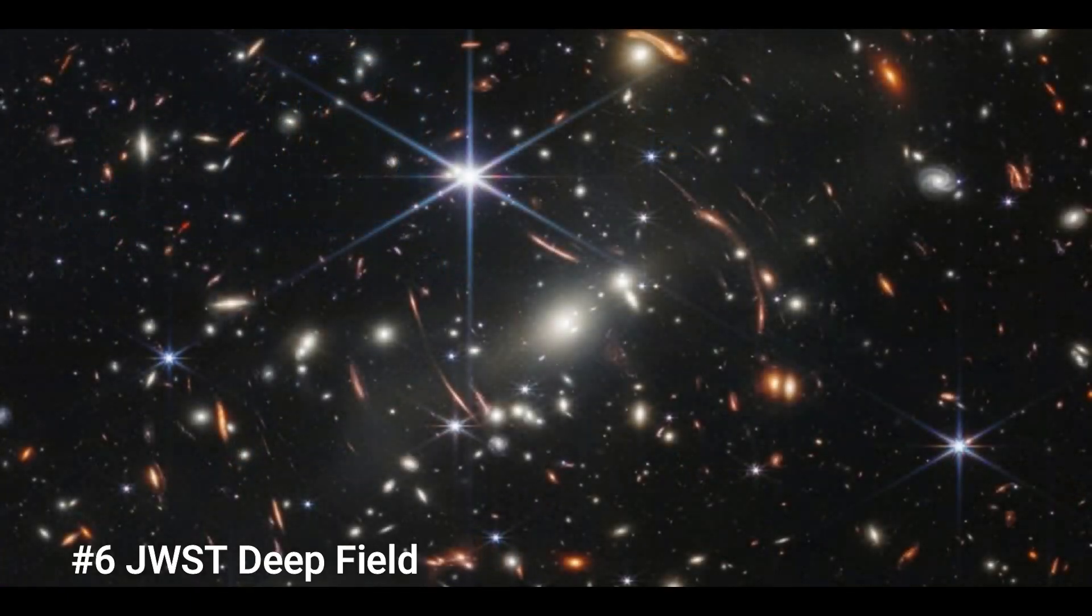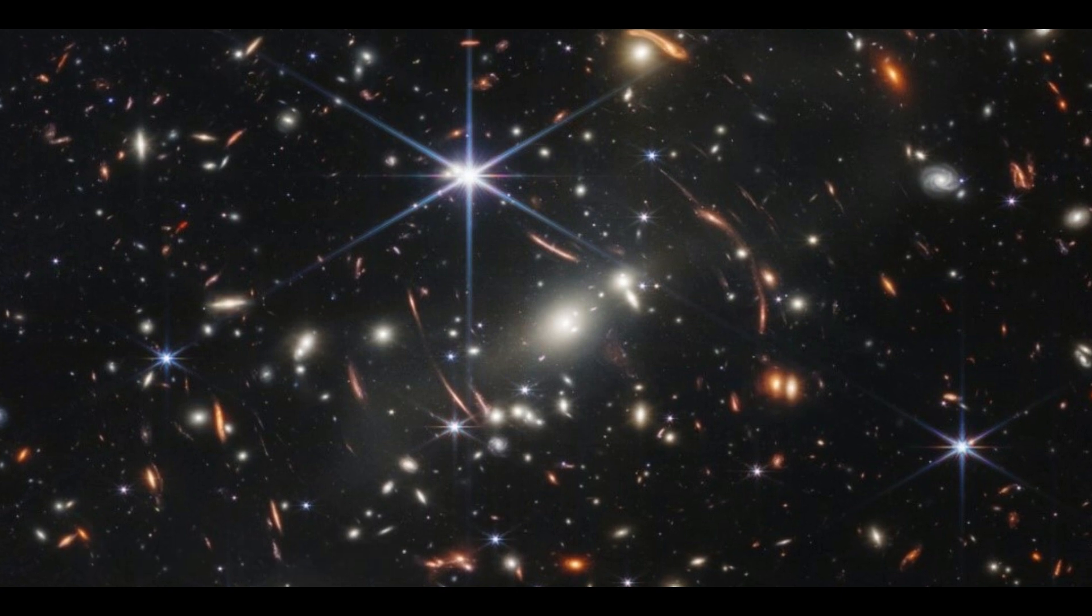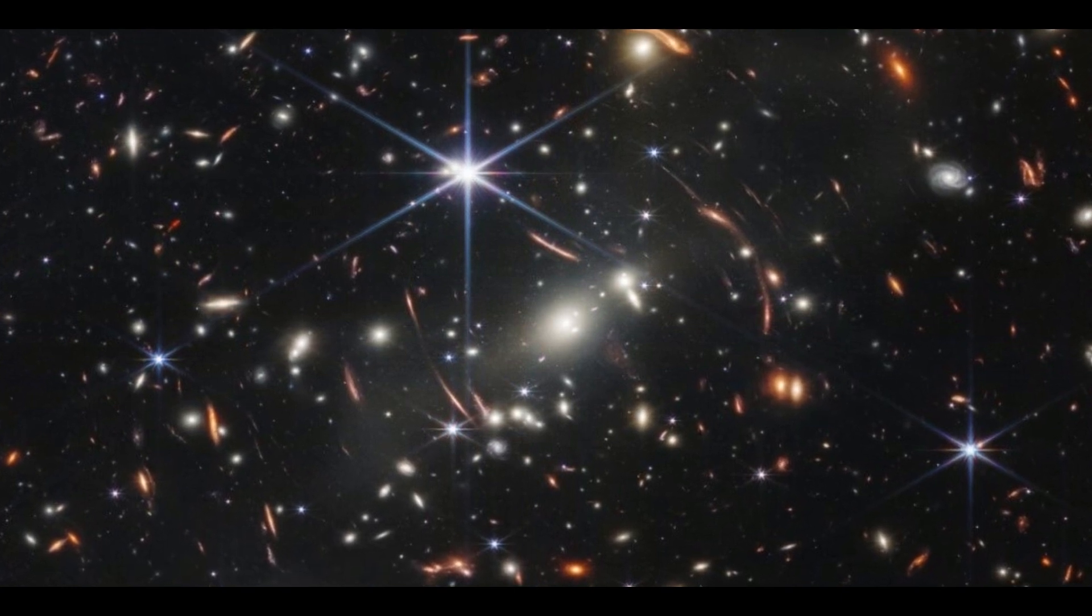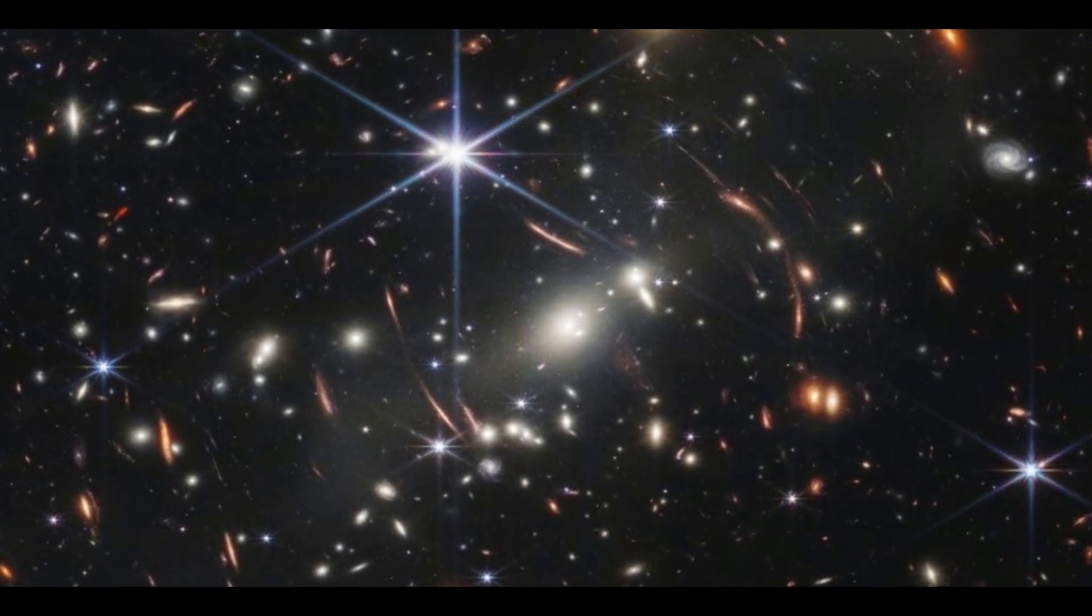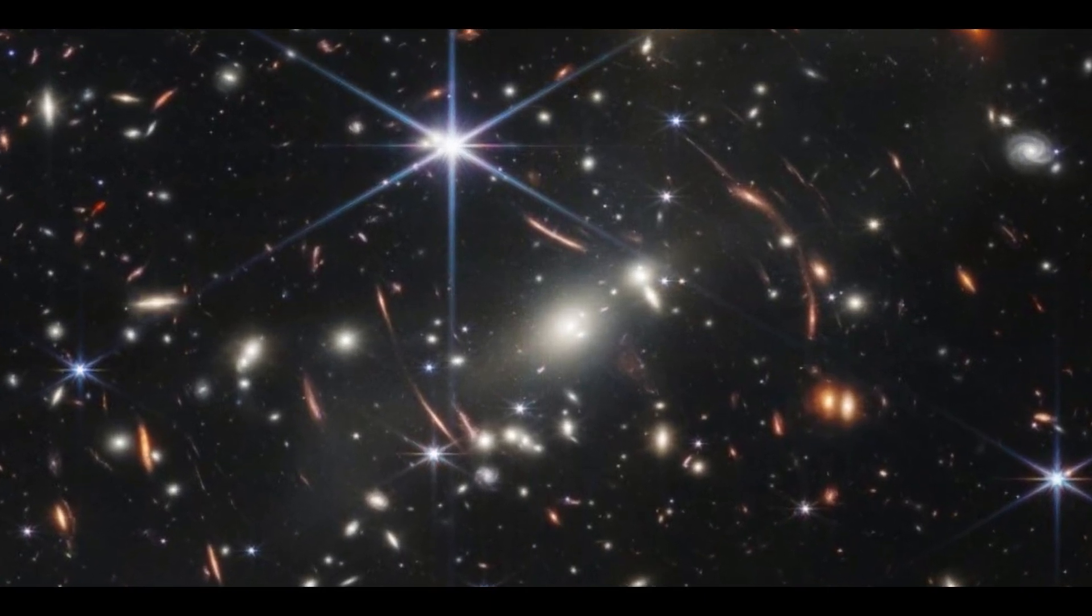Number 6. JWST Deep Field. The first image produced by the JWST that could be used to show off the telescope's actual capabilities was its first real image. This picture should shock your mind, so don't think it's just a scattering of chance twinkles.